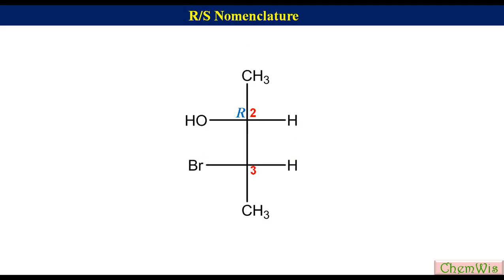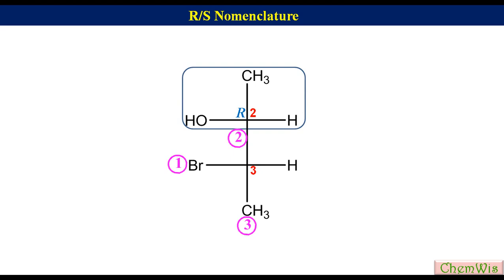At C3, the priority of bromine is 1, hydroxyethyl is 2, methyl is 3, and hydrogen is 4. Draw an arrow from 1 to 3 via 2. Since the fourth priority group is on the horizontal line and the direction of arrow is clockwise, the absolute configuration at C3 will be S.